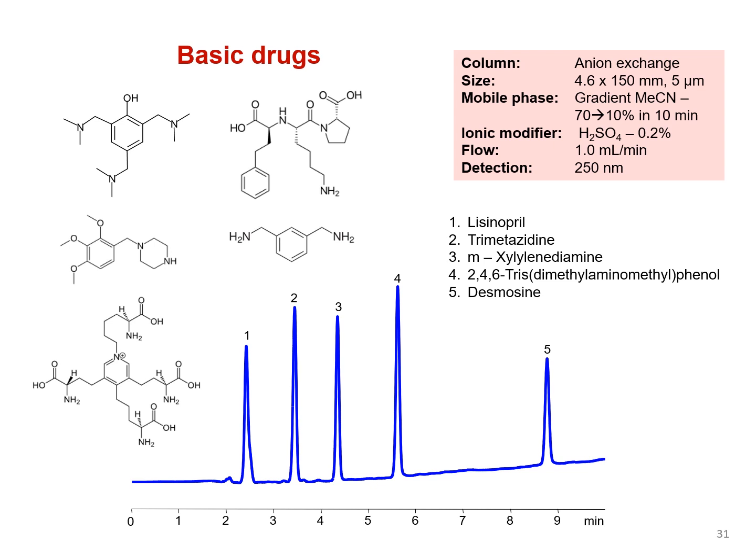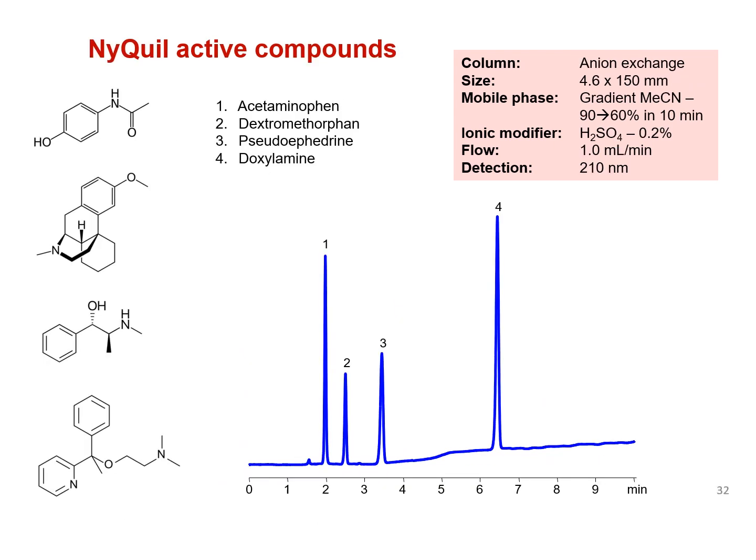Not everyone has 100 minutes to wait for their BIST separations. Here we show the separation of the active compounds in NyQuil using BIST. Note that the first compound, acetaminophen, has no charge and is retained by the HILIC mechanism. The BIST mobile phase and column combination allows users to employ HILIC for polar non-charged analytes while simultaneously allowing for BIST separation of charged analytes.